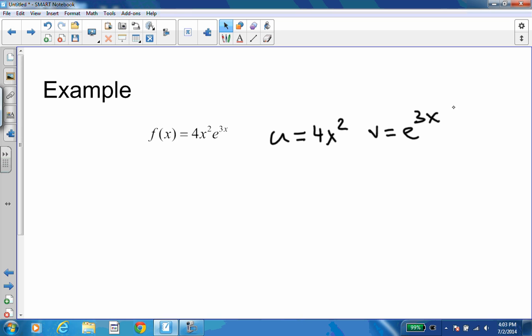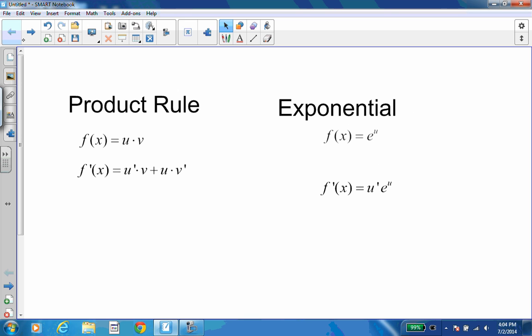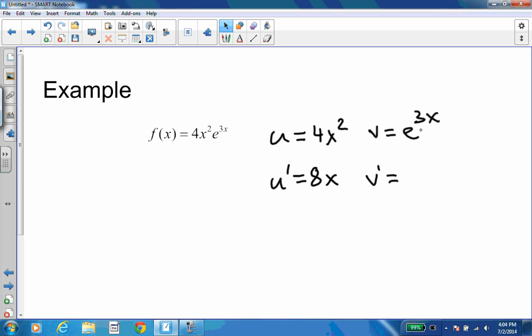Then u prime using the power rule—you drop your two, so you get two times four, which is eight x to the one. V prime using our rule that e to the u is u prime e to the u means we take the derivative of three x, which is just three, times e to the u, which is e to the three x.